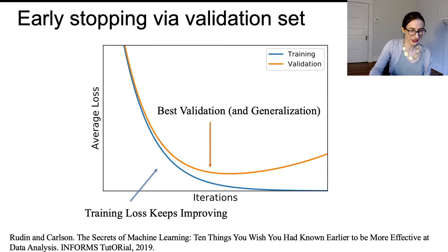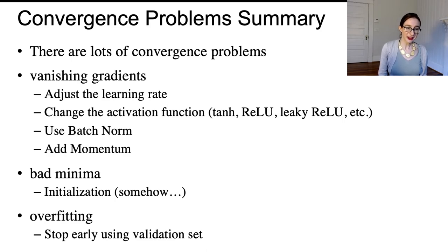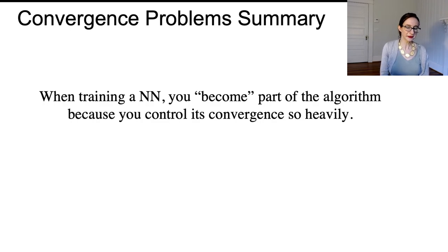Just to summarize, there are a lot of convergence problems that neural networks have. You can run into issues with vanishing gradients, where in order to deal with those problems you would adjust the learning rate, change the activation function, add batch norms in between various layers, or add momentum to try to keep your gradients flowing similarly to what they were before. You could also run into problems with bad local minima, which you might be able to help deal with if you know how to initialize—I personally don't. Neural networks also are very famous for overfitting, which you can help to deal with by looking at the validation set and looking at the performance on the validation set compared to that on the training set. I guess the main overall message here is that when you're training a neural network, you're actually part of the algorithm because there are so many steps that you can do to adjust the algorithm.